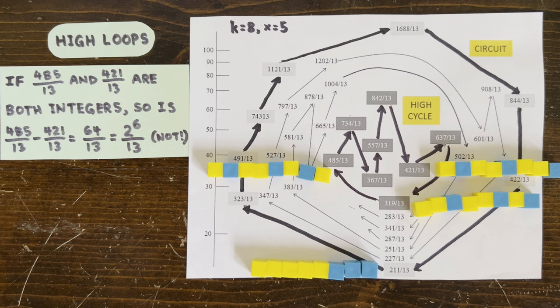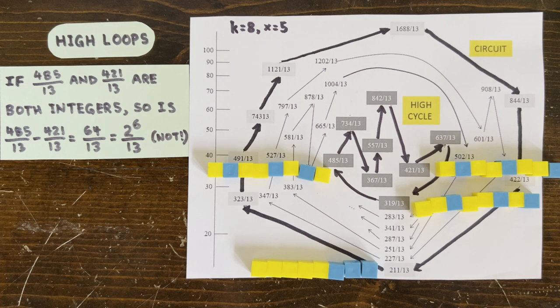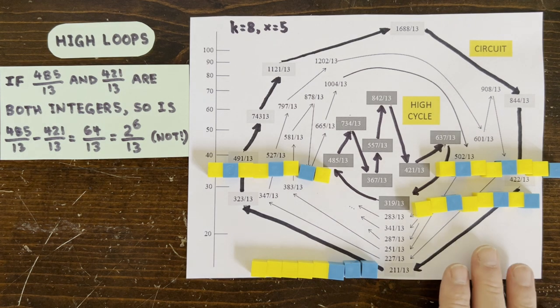So this high loop can't contain integers. And better still, every high loop in every chart like this has two such numbers, so high loops can never contain integers.